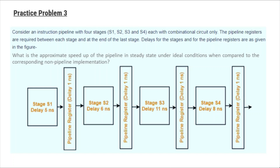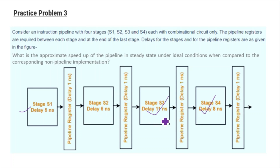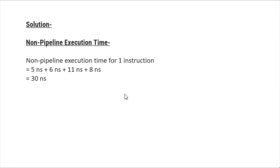From the figure, stage 1 has a delay of 5 nanoseconds, stage 2 has 6 nanoseconds, stage 3 has 11 nanoseconds, and stage 4 has 8 nanoseconds. Each pipeline register has a delay of 1 nanosecond.